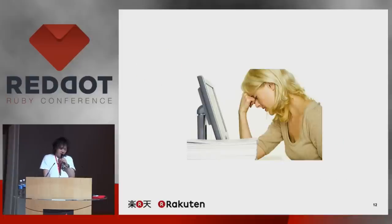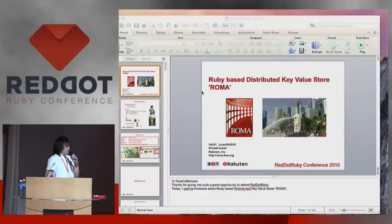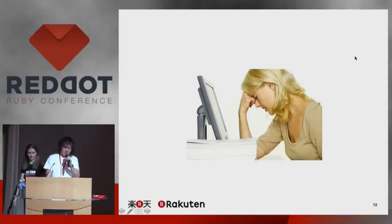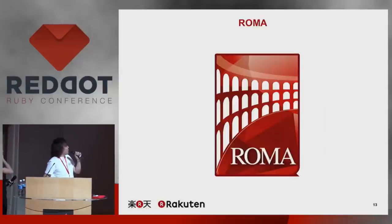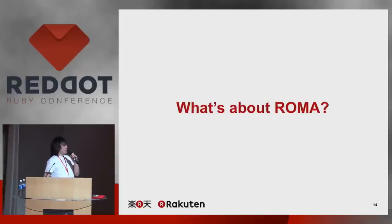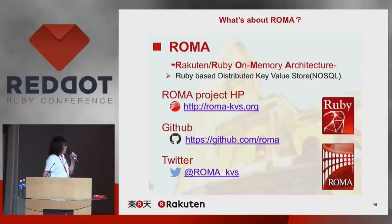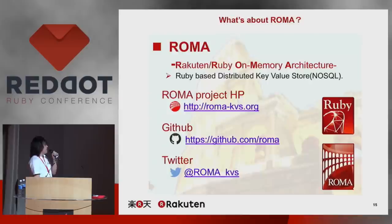So today I propose the best solution. The solution is ROMA. Of course, I know that everybody does not know ROMA. So what is ROMA? ROMA is Rakuten Ruby On-Memory Architecture, and it is a Ruby-based distributed key-value store.